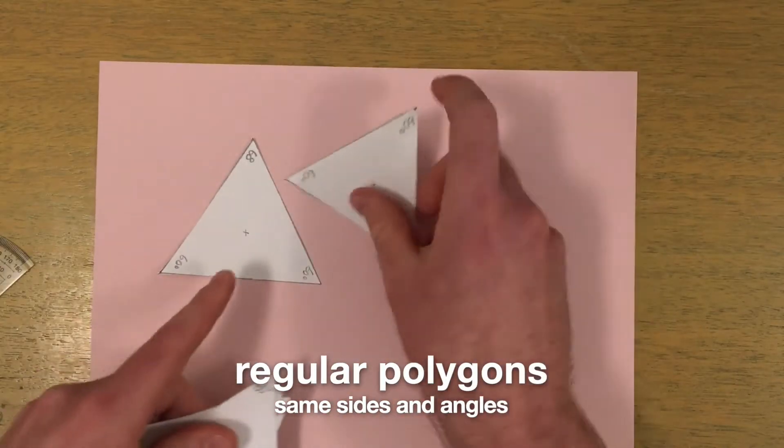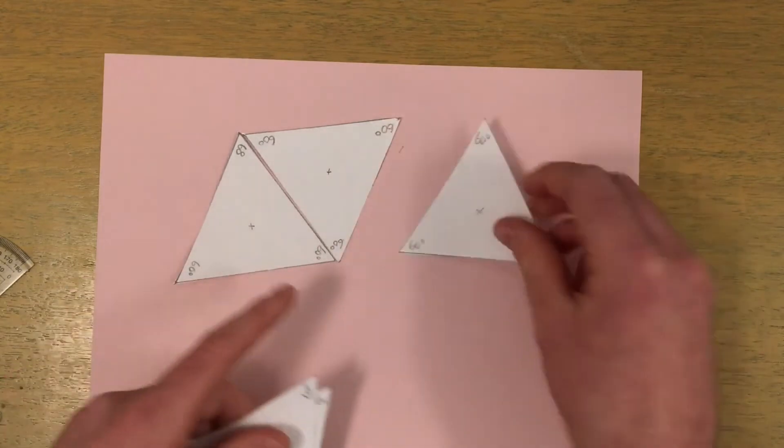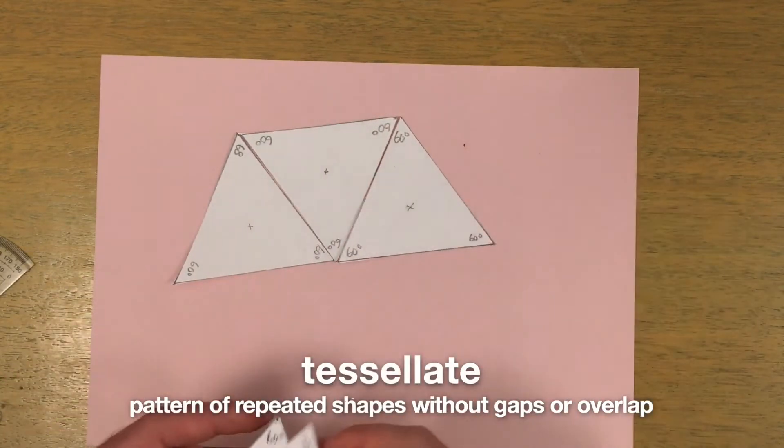Regular polygons have sides of all the same length and angles of all the same size. The question is, do all regular polygons tessellate?